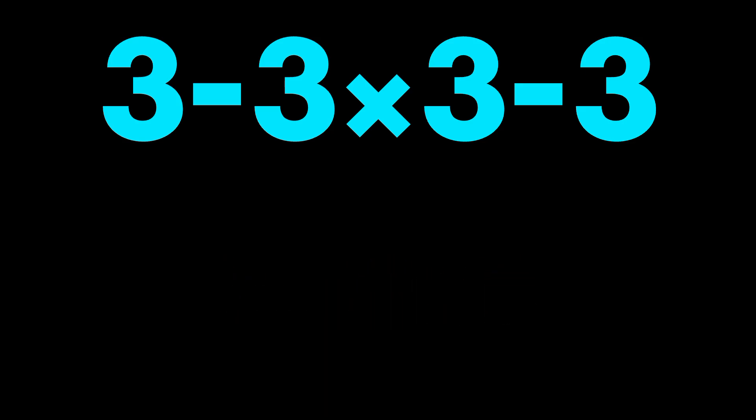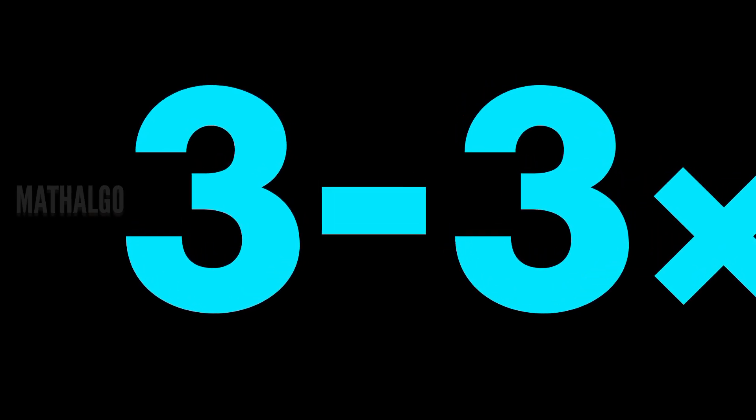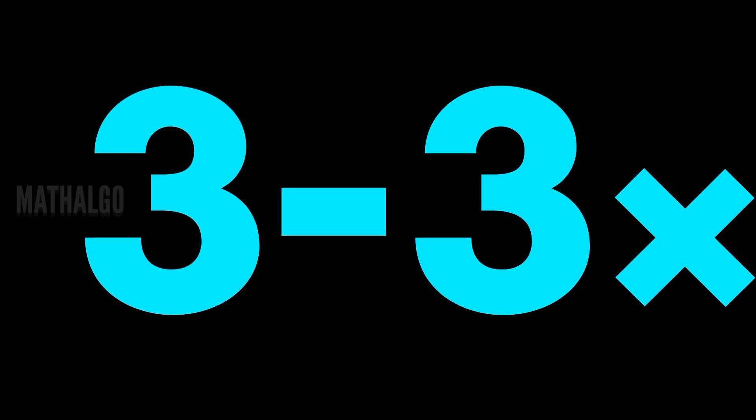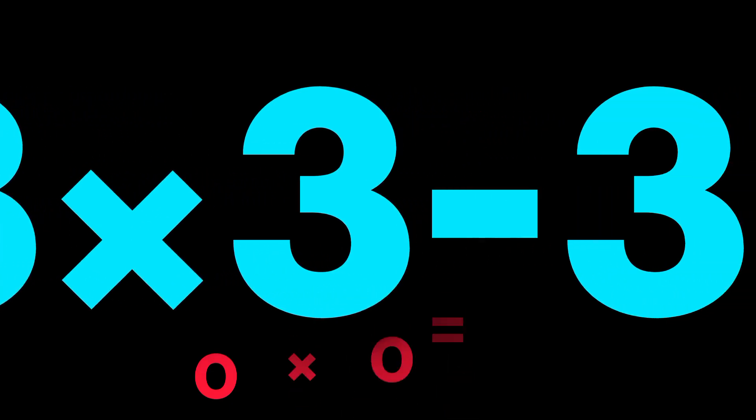Here's why this question tricks your brain. You see the minus signs and think left to right. So three minus three gives zero, zero times three minus three, and you land on zero.